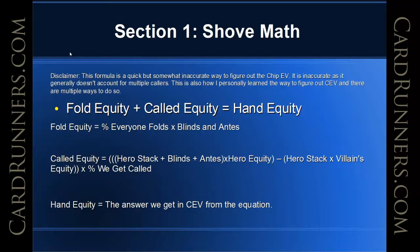Section 1 is going to be on ShoveMath. I feel as though this equation that I'm using requires a little bit of a disclaimer, simply because while this is a very quick way to figure out your chip equity by hand, it is somewhat inaccurate as it doesn't really account for multiple callers, although you can use a variation of it to do so. This is how I personally learned how to figure out CEV, and there are multiple ways to do so. If you don't really like this equation, you can try to find something else that works better for you, but I've found this one to be very simple and easy to teach my students.